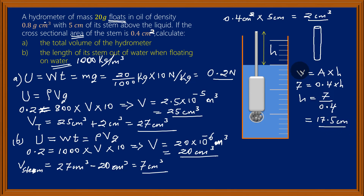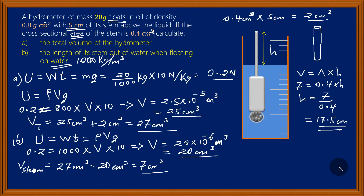So 17.5 centimeters is the length of the stem outside the water, confirming that when you immerse this hydrometer in a liquid of higher density, it sinks less. Previously the stem above the liquid was 5 centimeters when immersed in oil of lower density; now in water of higher density the height above the water is 17.5 centimeters. The question was just as simple as that. If you've got any other questions, please post them below any of my videos, and do not forget to subscribe so that many students can be aware of this problem-solving style.